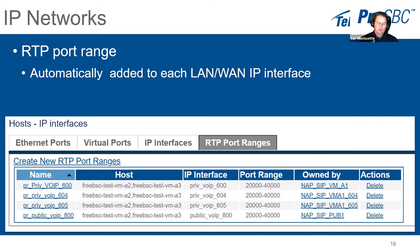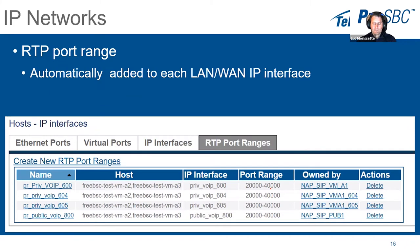That's it for the IP interface section. You can configure multiple network devices, multiple VLANs on each device, and then IP interfaces attached to them. These IP interfaces are what you use in the rest of the configuration to determine how SIP packets, RTP packets, and other traffic will go in or out of the system.